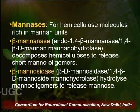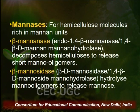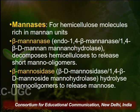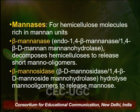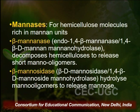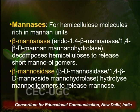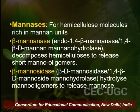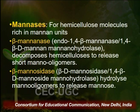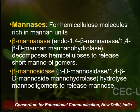The second type of hemicellulase is manase. As the name indicates, manases act upon hemicellulose molecules rich in mannan units. There are two types: beta-mannanase and beta-mannosidase. Beta-mannanase hydrolyzes the endo-1,4 beta linkage (also known as 1,4-beta-D-mannan manohydrolase), decomposing mannan-rich hemicellulose to release mannan oligomers. These oligomers are then acted upon by beta-mannosidase to release the monomer mannose.